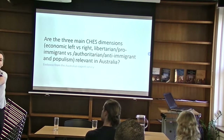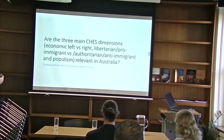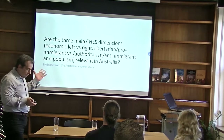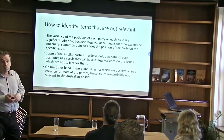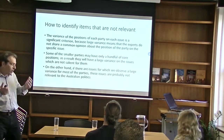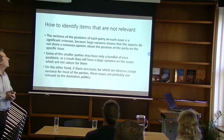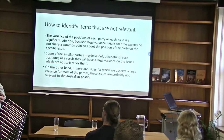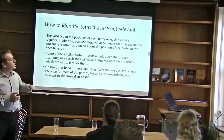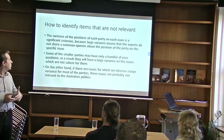With this diagram we have completed the Greek case, and we are going to the more interesting part — at least for Australia. The idea is to answer the question of whether the three dimensions of the Chapel Hill Expert Survey can be used in Australian politics. First we need to identify how to identify items that are not relevant for Australian politics. One method I use whenever I try to create a voting advice application in a country where I don't know the local political situation is looking at the variance of the position of each party on each issue — a large variance means the experts do not share a common opinion about the position of the party.